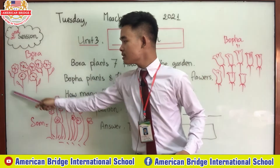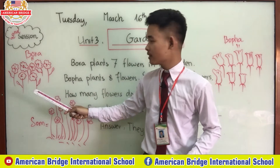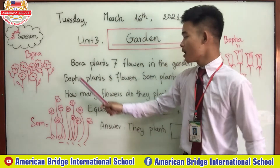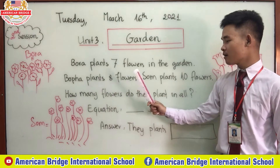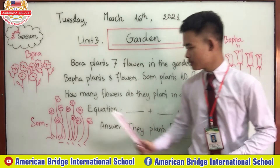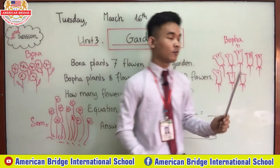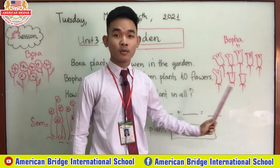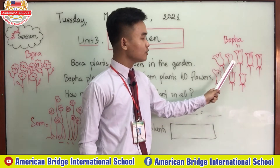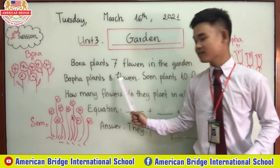These are Bora's flowers. Bora plants seven flowers in the garden — one, two, three, four, five, six, seven. Boppa plants eight flowers. These are Boppa's flowers. Let's count all together: one, two, three, four, five, six, seven, eight. Boppa plants eight flowers.